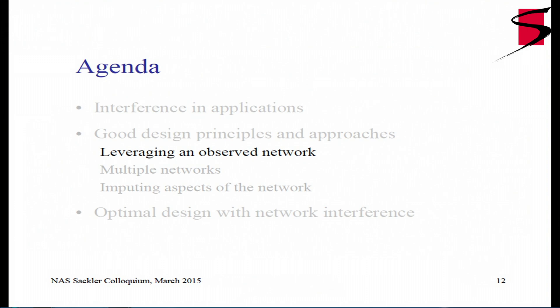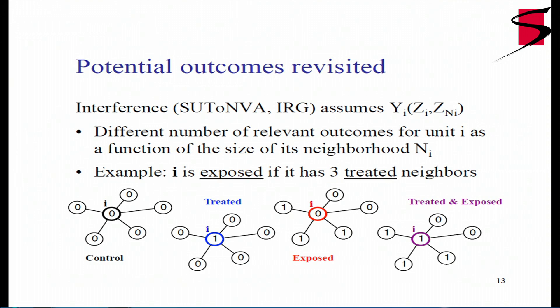Now we move to a situation where a network enters the picture. We assume we observe it and believe it is the source of interference. The network interference assumption — also called individualized treatment with reference groups or stable unit treatment on neighbors value assumption — says that Y_i is a function of the treatment given to unit i and the treatment in the neighborhood of unit i, where N sub i is defined by the graph. The table of potential outcomes no longer simplifies as much; each row i has a different number of relevant outcomes as a function of the neighborhood size.